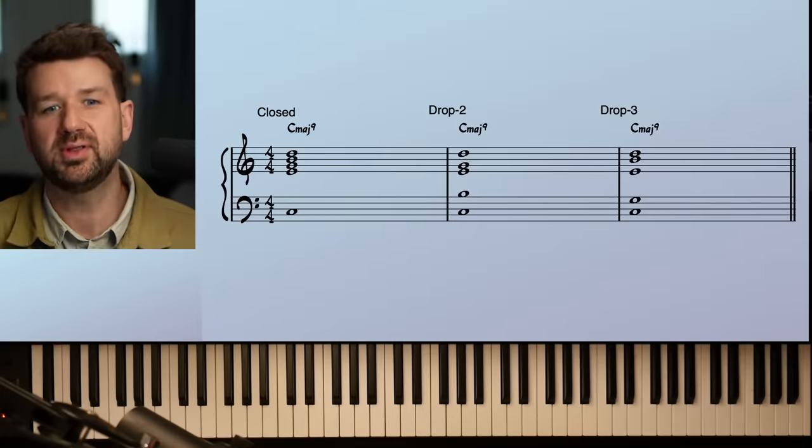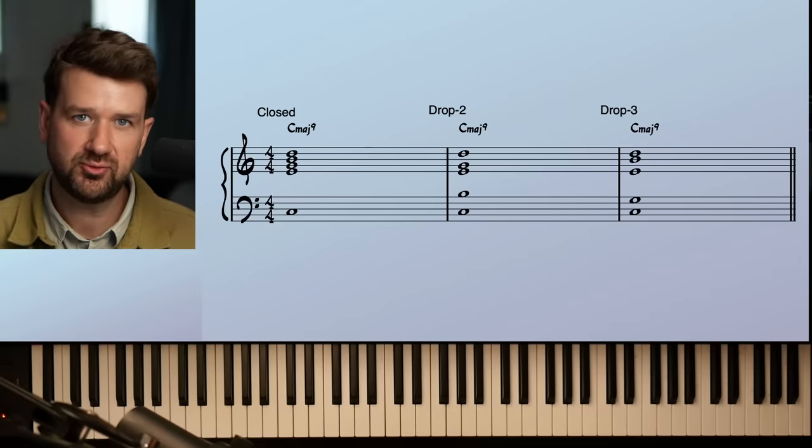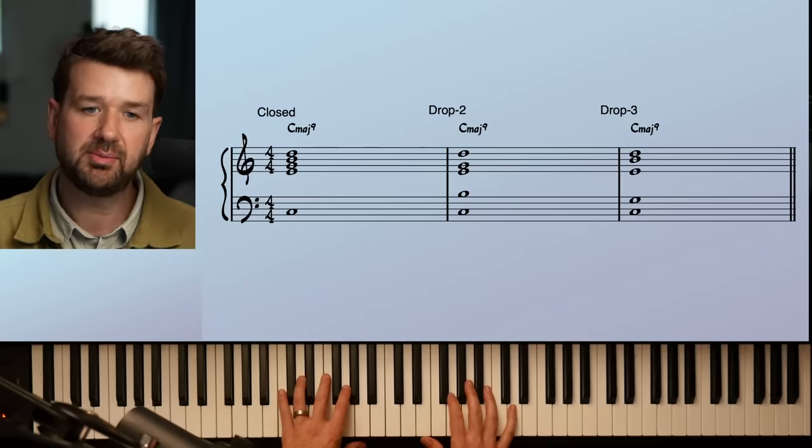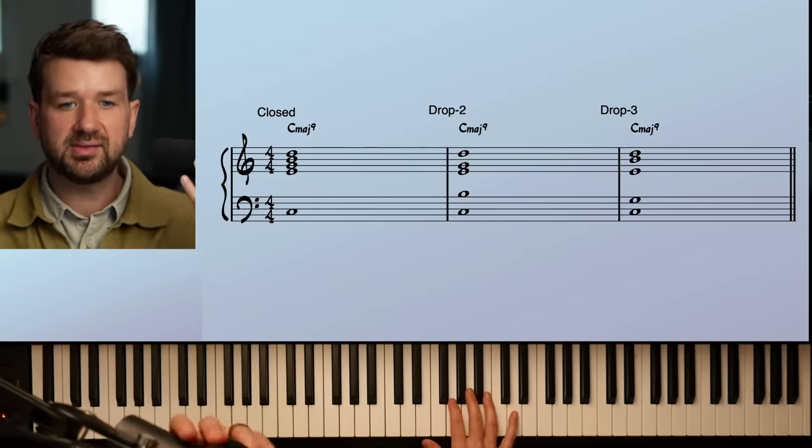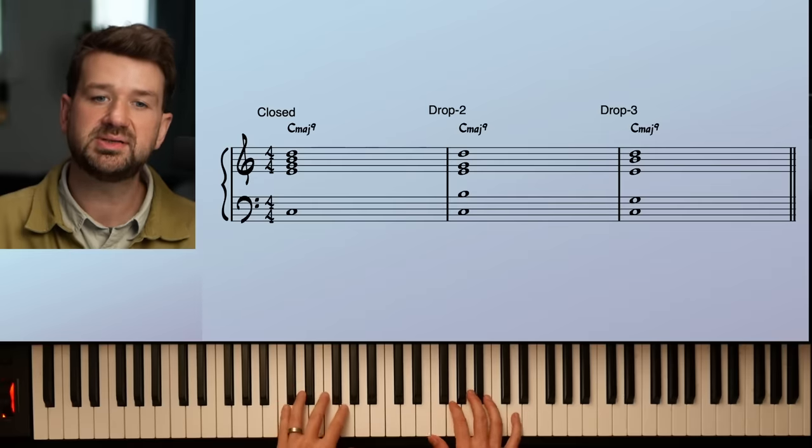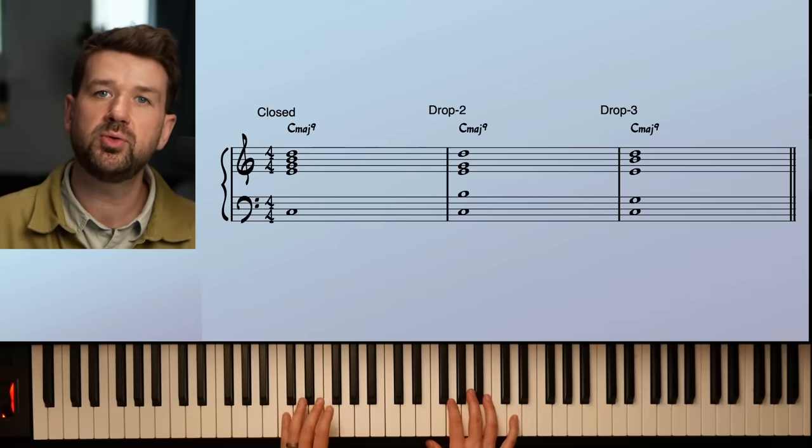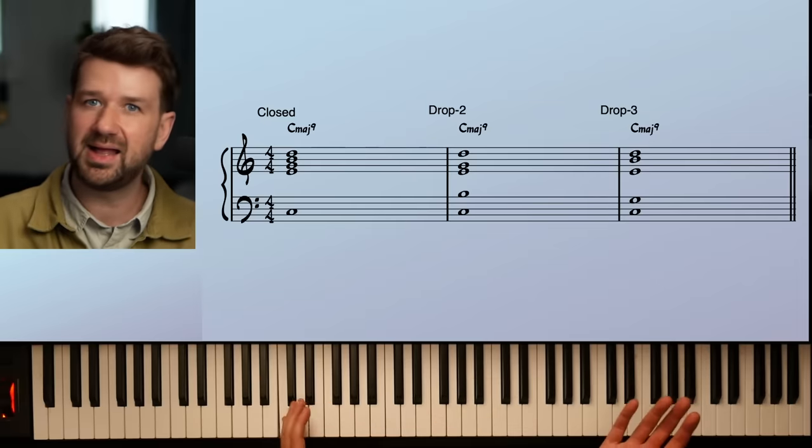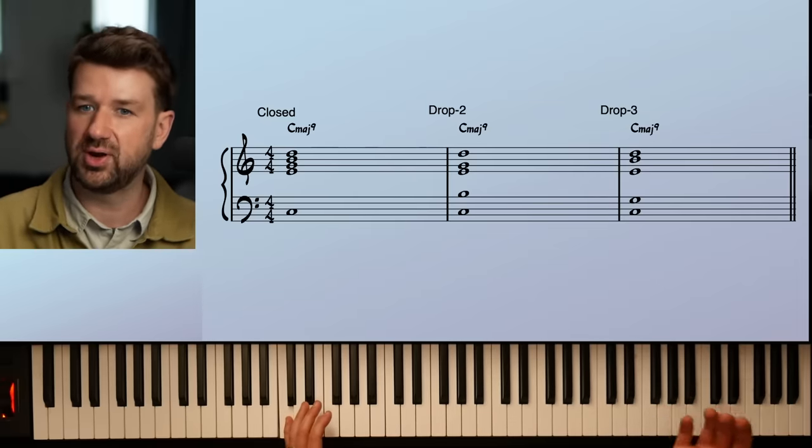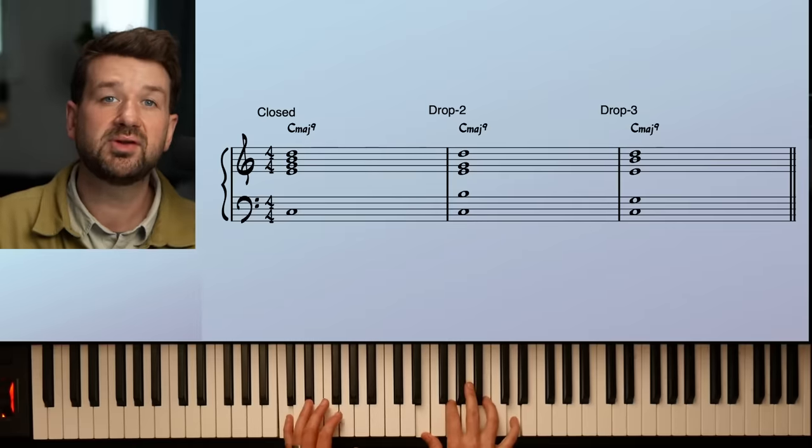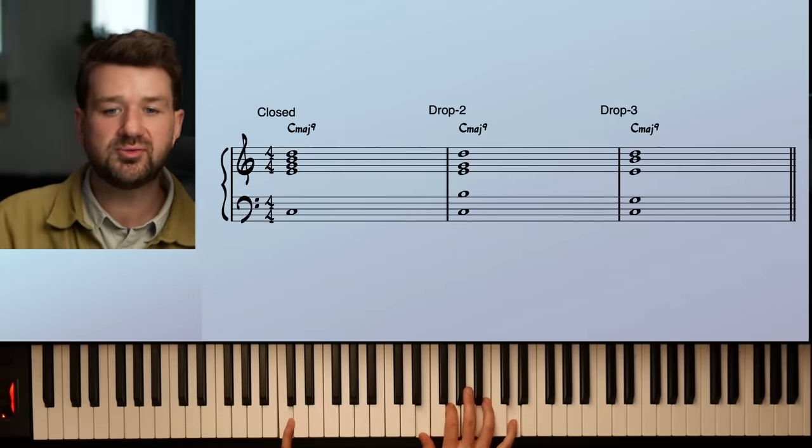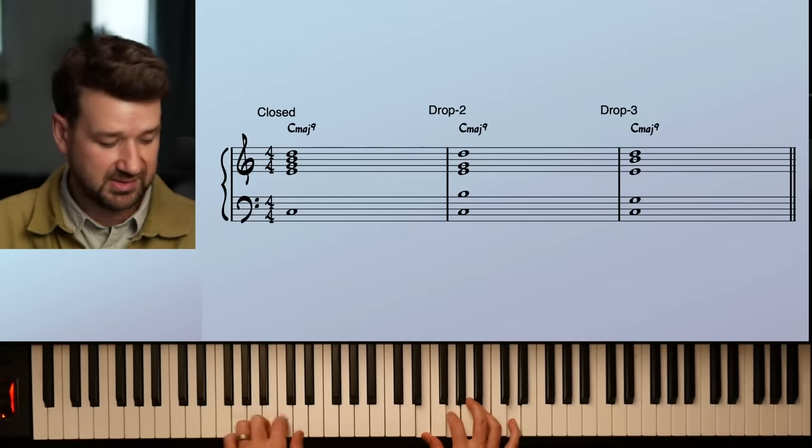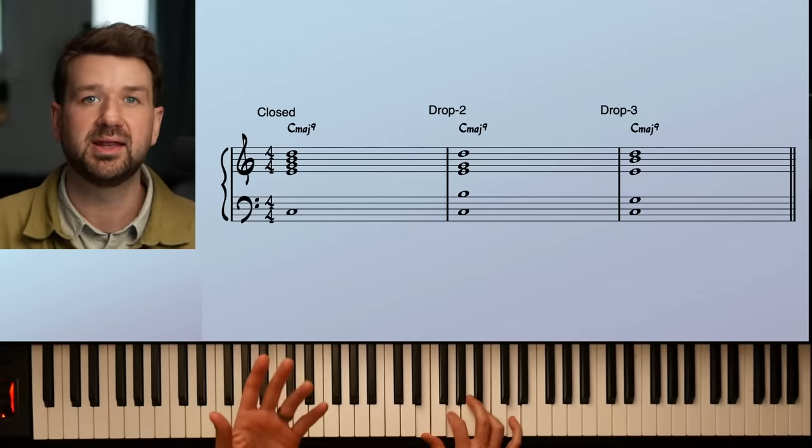All right, before we get to On Green Dolphin Street, let's just have a look here at what closed voicings are, drop two and drop three. In this context, I'm going to use big five note voicings in two hands, as you see here, just a C major nine to start it off. So we have the root in our left hand. Now notice the root of all of these chords. It's really not connected to the structure that you might call closed, drop two, drop threes. In other words,